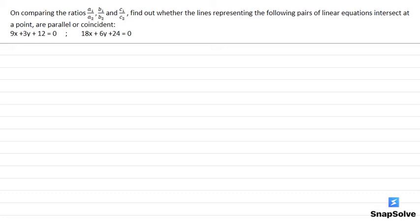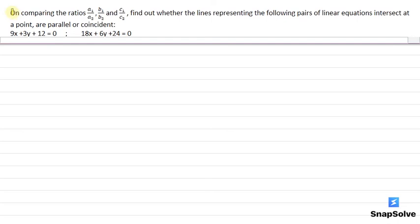Hello everyone, today I will be the tutor for this question. Let me first explain this question to you. The question is on comparing the ratio a1 by a2, b1 by b2, and c1 by c2. We have to find out whether the lines representing the following pair of linear equations — 9x plus 3y plus 12 equals 0 and 18x plus 6y plus 24 equals 0 — intersect at a point.